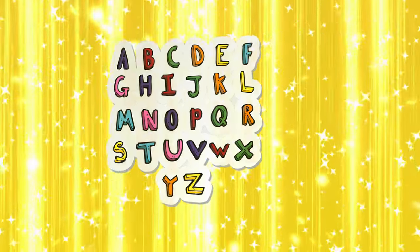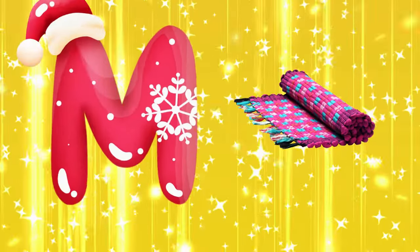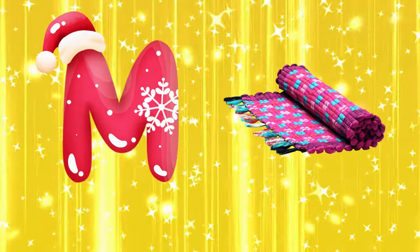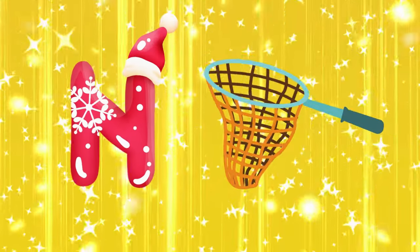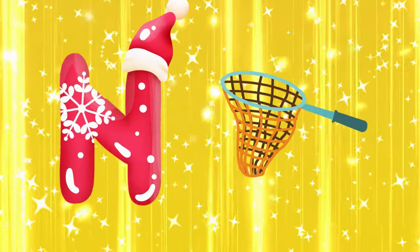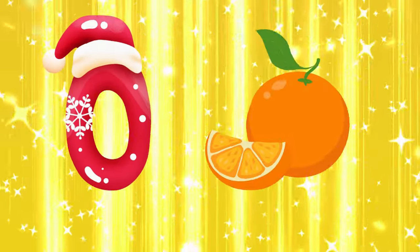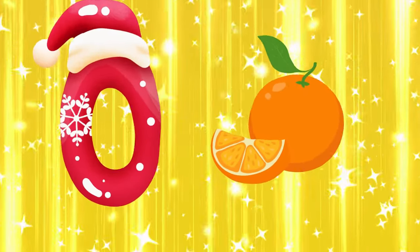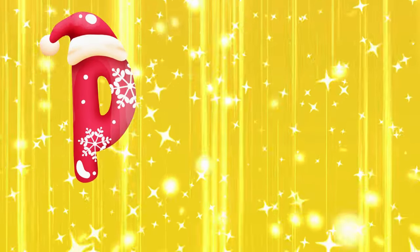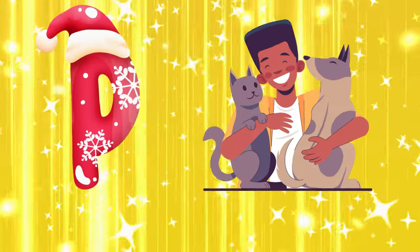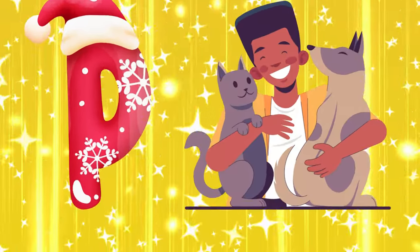M is for mat, m-m-mat. N is for net, n-n-net. O is for orange, o-o-orange. P is for pet, p-p-pet.